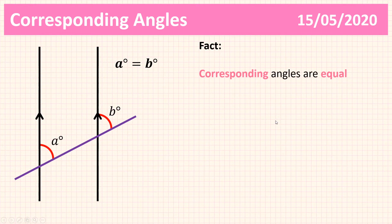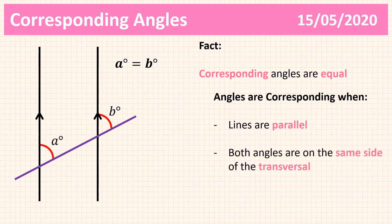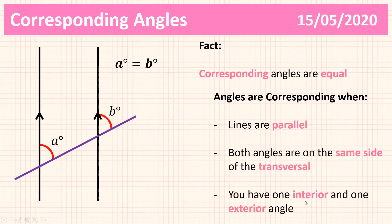Corresponding angles are equal. And this is due to the following characteristics of corresponding angles. Angles are corresponding when the lines are parallel, both angles are on the same side of the transversal, and we have one interior and one exterior angle.